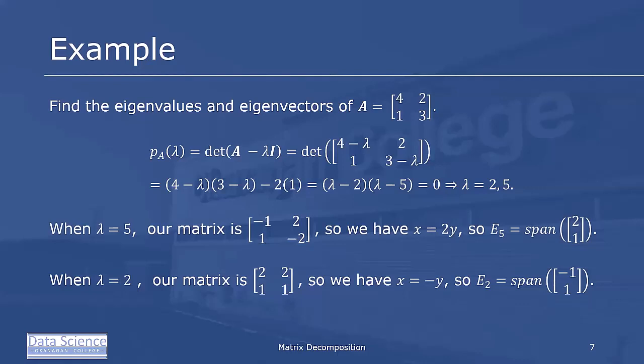Let's consider the following problem: find the eigenvalues and eigenvectors of the matrix A = [[4, 2], [1, 3]]. First, we begin by finding the characteristic polynomial — the determinant of [[4 minus lambda, 2], [1, 3 minus lambda]]. Multiplying that out and refactoring, we get (lambda minus 2)(lambda minus 5) equals zero, so lambda equals 2 or lambda equals 5.